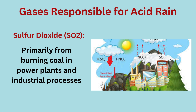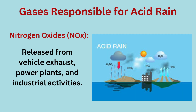Key gases: sulfur dioxide (SO2), primarily from burning coal in power plants and industrial processes. Nitrogen oxides (NOx): released from vehicle exhaust, power plants, and industrial activities.